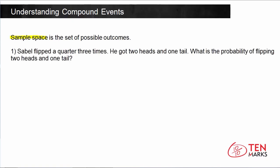Here's the first problem. Sable flipped a quarter three times. He got two heads and one tail. What is the probability of flipping two heads and one tail? So first we need to figure out the sample set of flipping a coin three times.